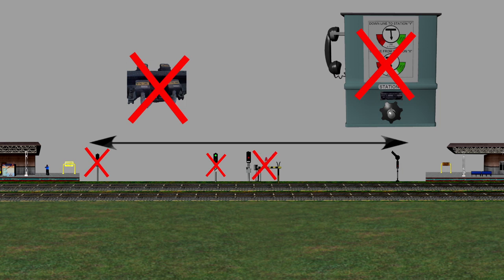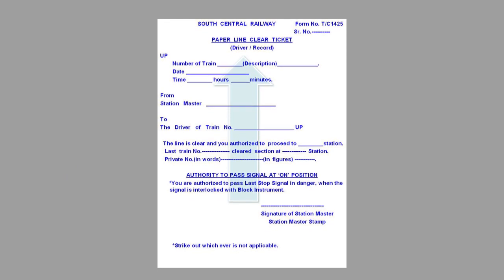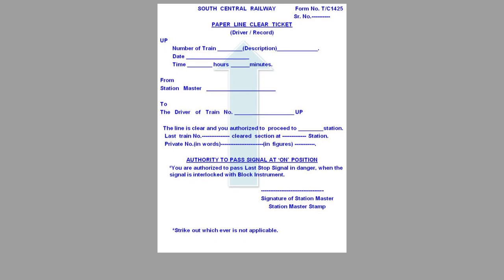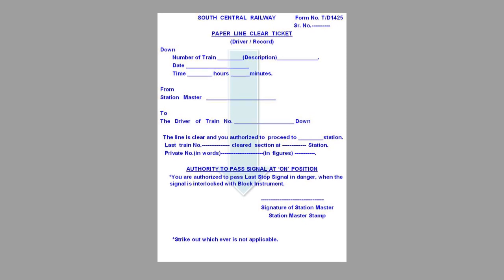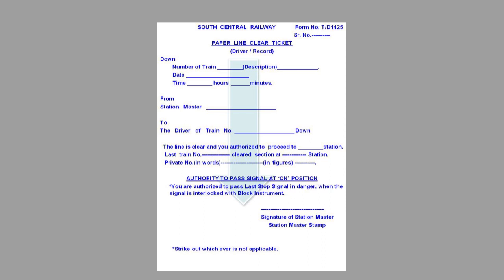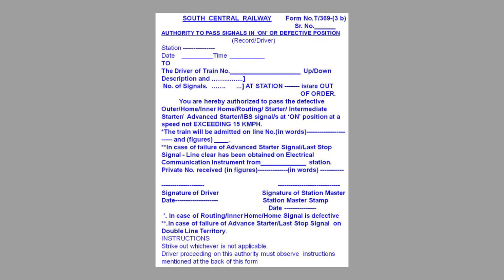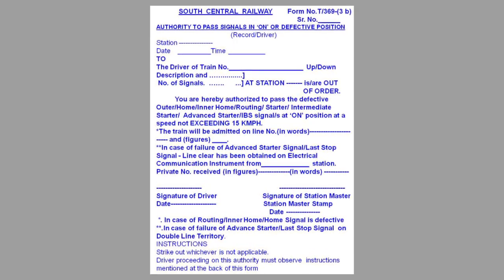The station master shall exchange a private number with the gate man before obtaining or granting line clear. The station master will take line clear from the advance station and issue written authority: PLCT T-bar C 1425 for up trains, T-bar D 1425 for down trains, for passing the last stop signal at on position, and T.369 3B for passing the IB signal at on position.